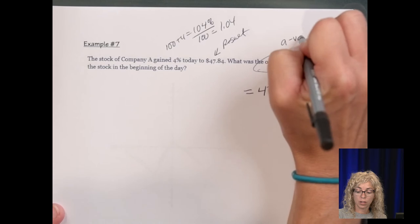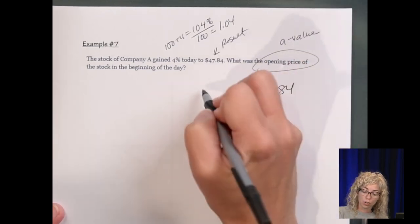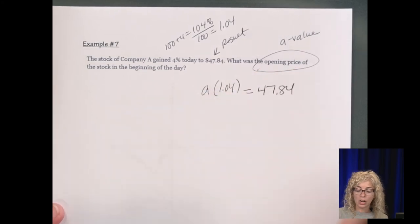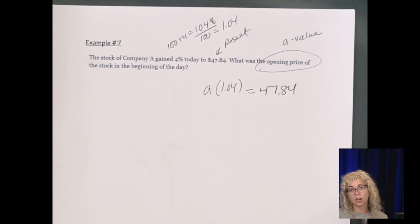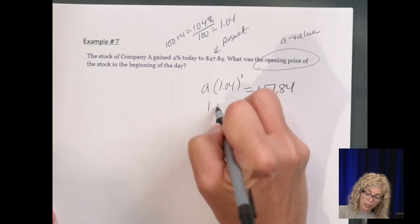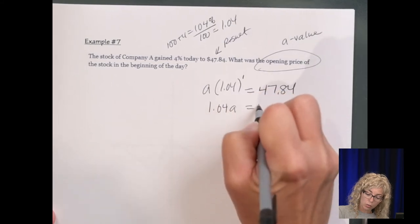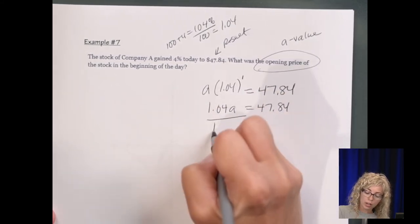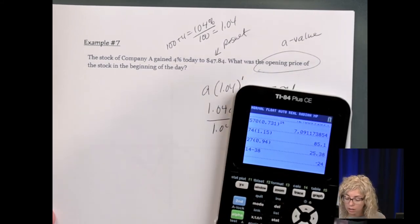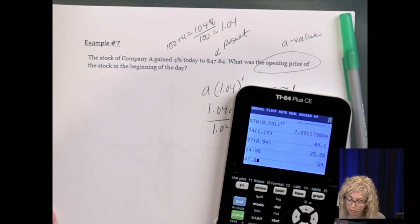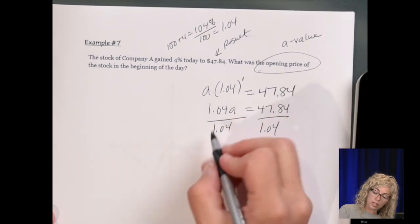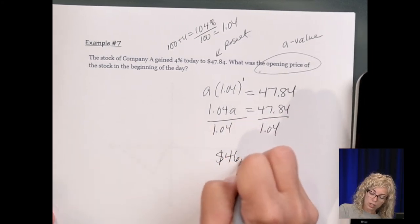What was the opening price? So our opening price is the a value. So it's our a value in a times b to the x. So I'll call it a times b. And our x, because we are looking at just that one time period, that's going to be a 1. So we have 1.04a equals 47.84. Divide by 1.04, 47.84 divide by 1.04, we get 46. So the opening price, $46.